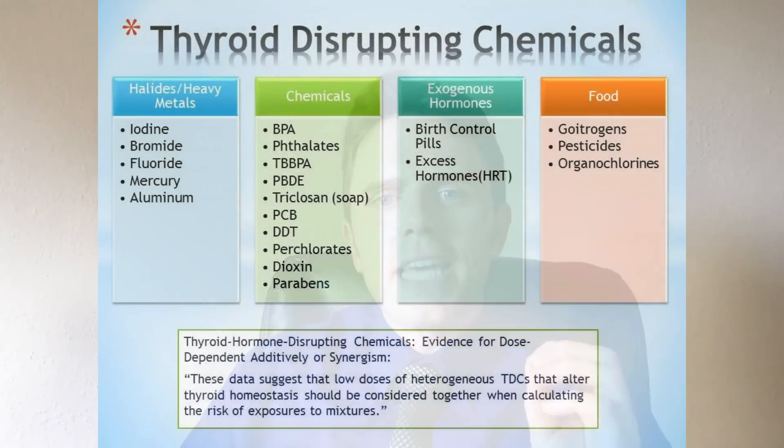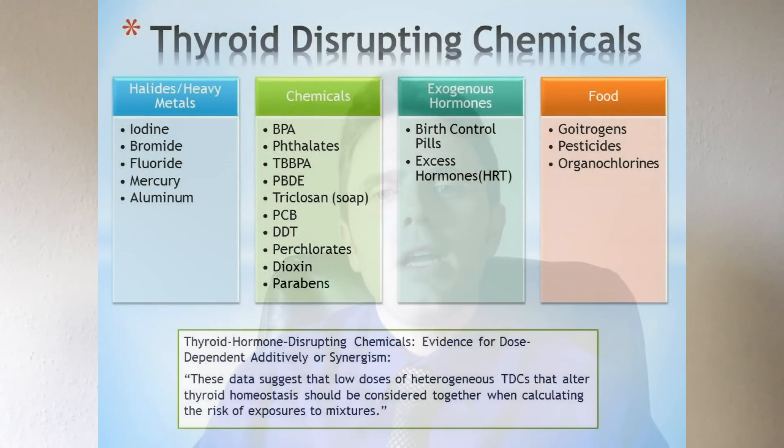Hi, this is Dr. Justin here, and today's talk is on thyroid function and thyroid-disrupting chemicals that can actually affect your thyroid function. So first off, what is your thyroid gland? Well, that's the gland right in your throat here. This gland produces a hormone called T4. T4 then gets converted into T3, and T3 is our active thyroid hormone.